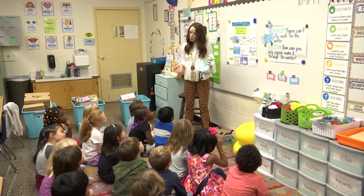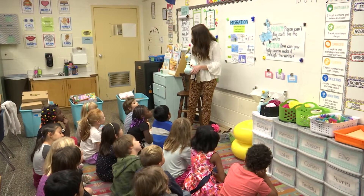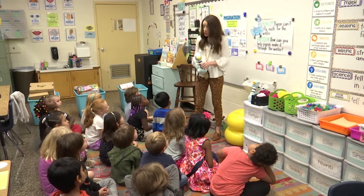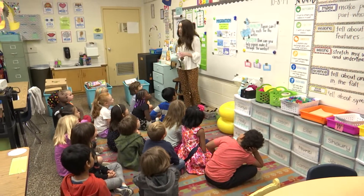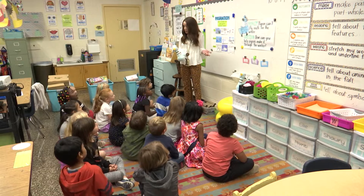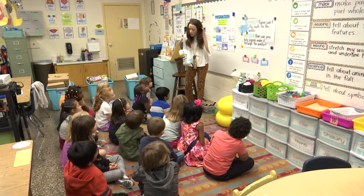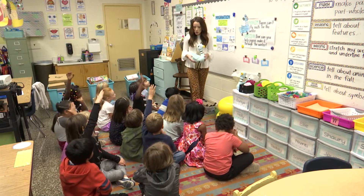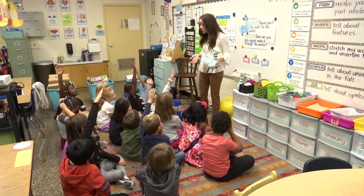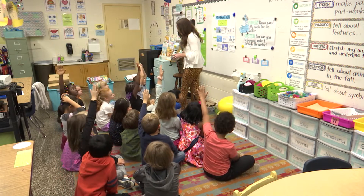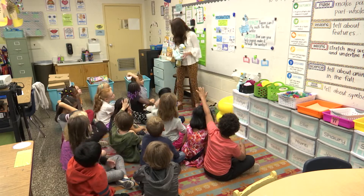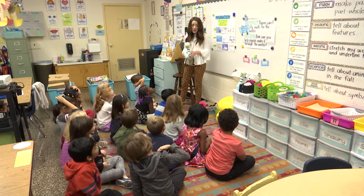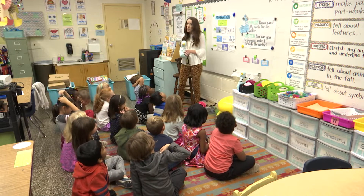We're going to work together. We've started our project by working with our partners and we're going to try to think of ideas that are going to help Pigeon get through the cold, cold winter because he can't migrate and that's a problem. What is the word that we use when we talk about animals and they have to change what they're doing or how they're living so that they can survive in their environment? Drew — adapt. They have to adapt. Excellent. So Pigeon is going to have to adapt in his cold environment.